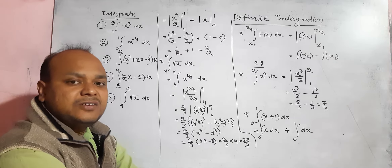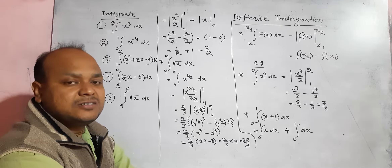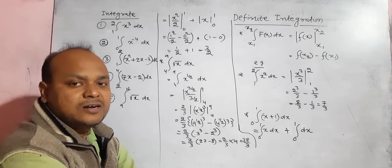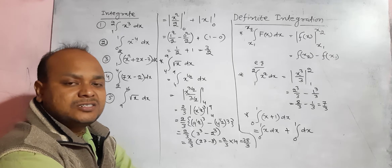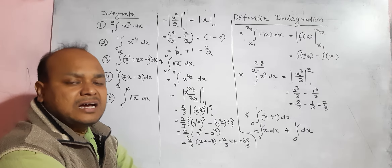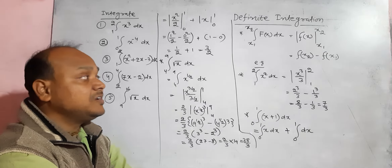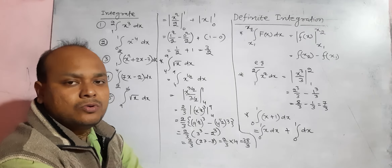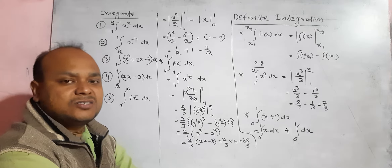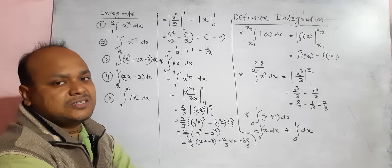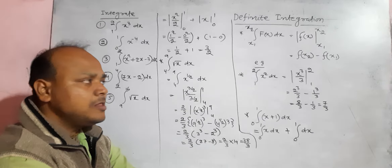In indefinite integration, there is a constant of integration, but in definite integration there is no constant of integration. In indefinite integration the answer is in terms of a variable, but in definite integration there is no variable in the final answer — there is a constant in the final answer. So let us discuss definite integration in detail.